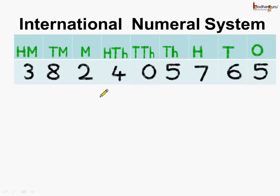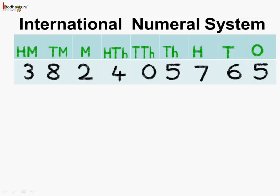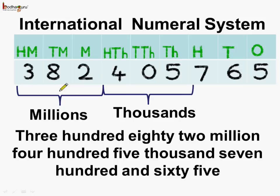We read all the millions together first, then the thousands, then hundreds followed by tens and ones. So the number becomes 382 million, four hundred and five thousand, seven hundred and sixty-five. So we can read this number easily as 382,405,765.